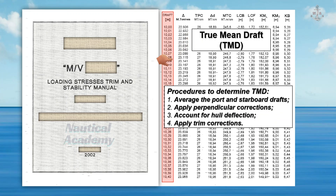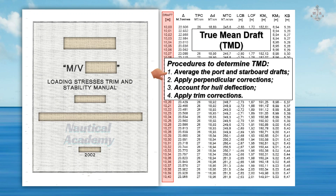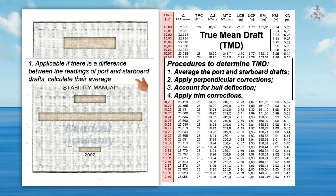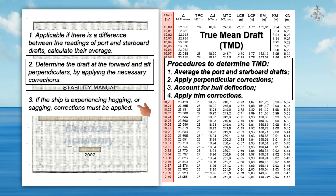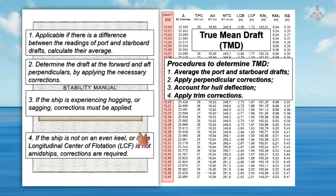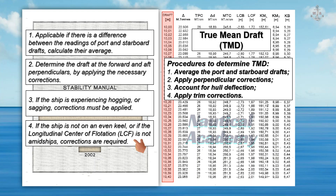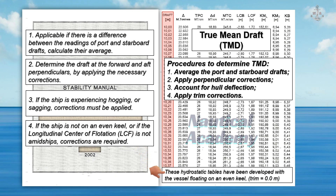Determining the true mean draft involves the following procedures. First, find the average of port and starboard drafts — if there is a difference between port and starboard draft readings, calculate their average. Second, apply the perpendicular corrections to determine the draft at the forward and aft perpendiculars. Third, account for hull deflection: if the ship is experiencing hogging or sagging, corrections must be applied. And fourth, apply trim corrections — if the ship is not on an even keel, or if the longitudinal center of flotation (LCF) is not amidships, corrections are required, since hydrostatic tables are developed with the vessel floating on an even keel, meaning zero trim.